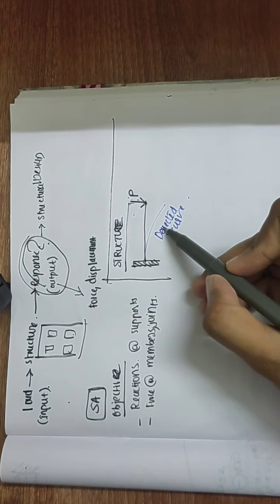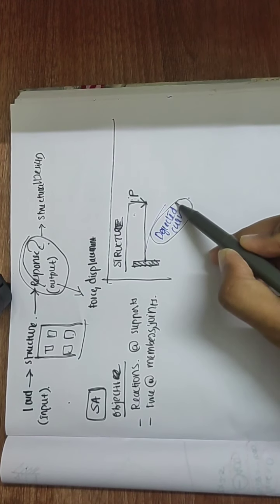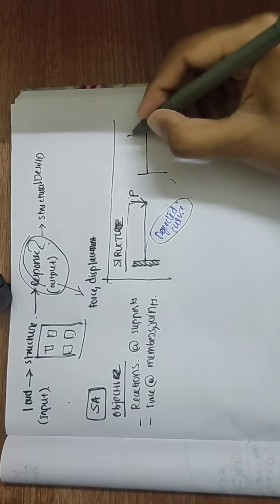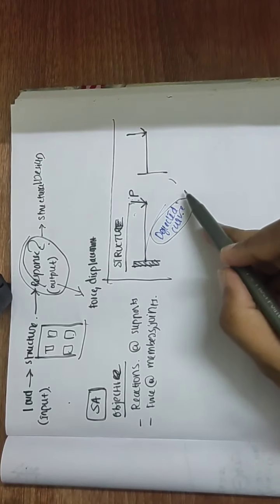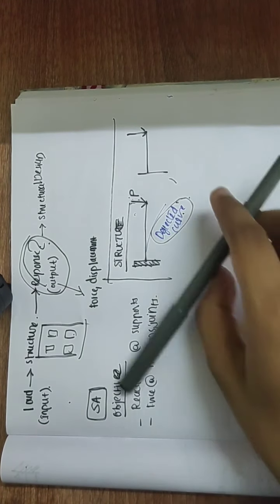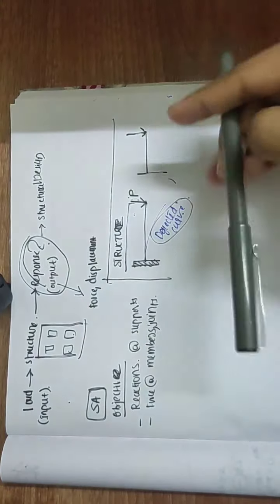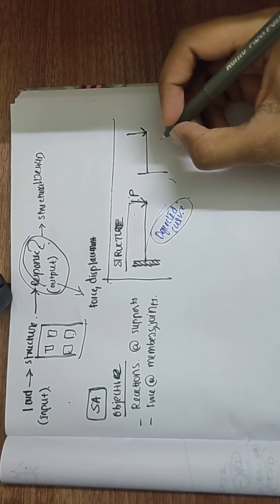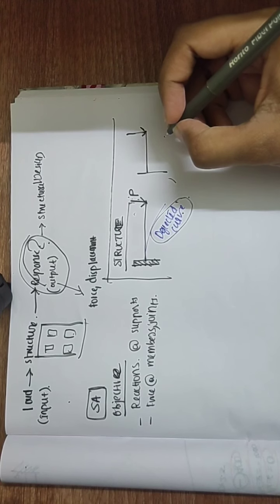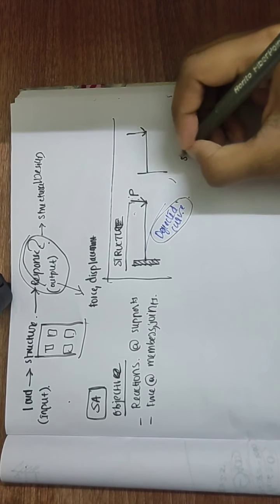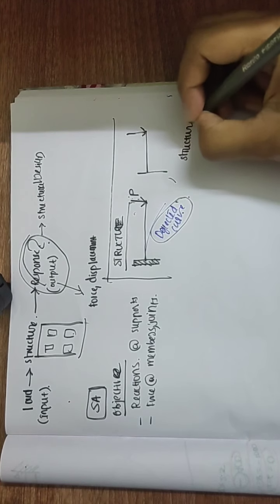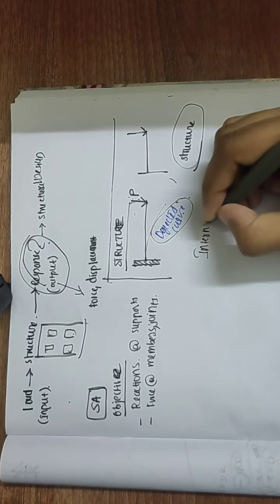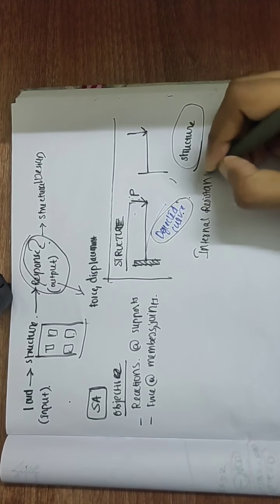In a stable system, after the load is removed, the deflected curve returns to its original position. The internal resistance that is formed during this process is known as the structure. That internal resistance is what defines a structure.